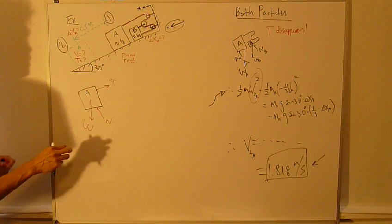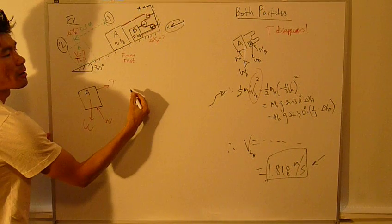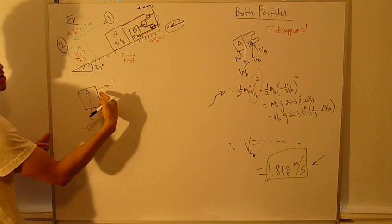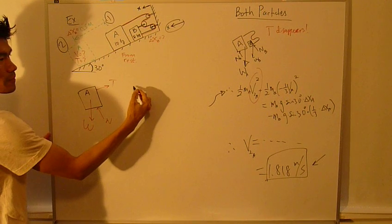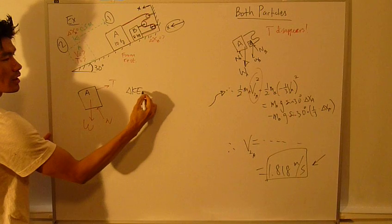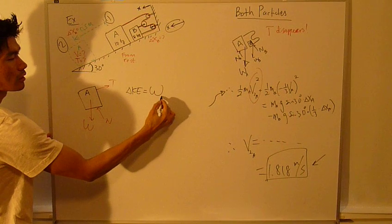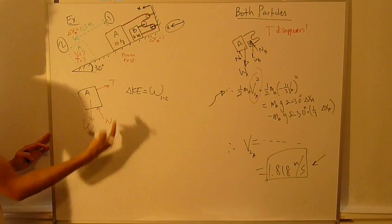Now, you can just apply the work energy equation again, just for this particle. So you have delta KE equals work one-two, just for particle A.